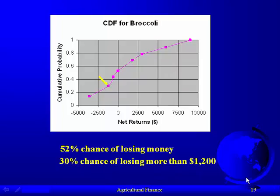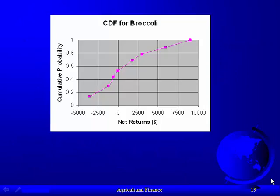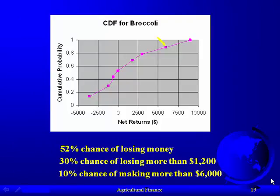Remember, the expected return was $1,452. But when we assign risk to these outcomes, we see this is a very risky venture. Would you recommend that a young farmer with very little equity put all their eggs into organic broccoli? No — because every one in three years they could lose $1,200 and they can't survive that. But what about a well-established farmer putting maybe a tenth of their acreage into organic broccoli, so they could withstand losses in anticipation of making it all back in the big years?